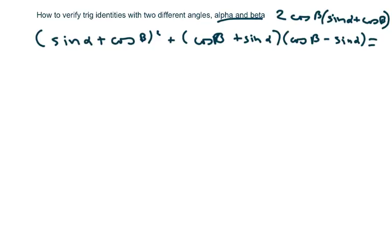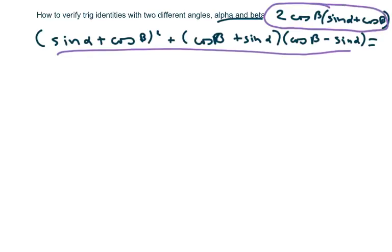We want this here to equal 2 cosine of beta times the quantity of sine of alpha plus cosine of beta.